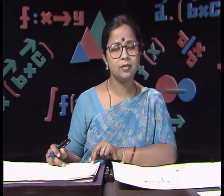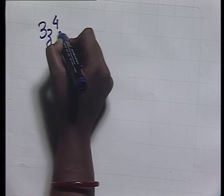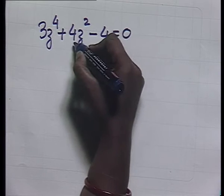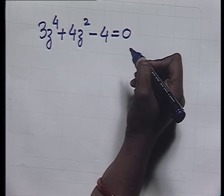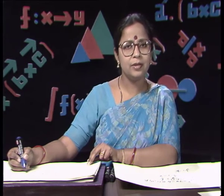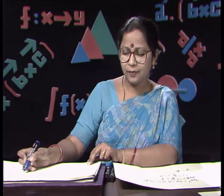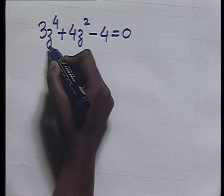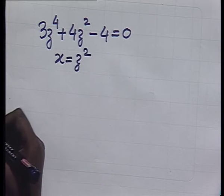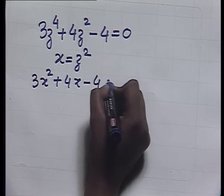Sometimes we come across equations which are not of quadratic form. For example, 3z⁴ + 4z² - 4 = 0. This is not of quadratic form, so how do we solve it? We try to reduce it to quadratic form. Since the powers of z are even, this can be reduced to quadratic form by the substitution x = z², so the equation becomes 3x² + 4x - 4 = 0.